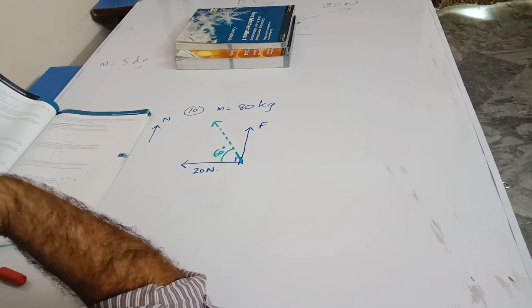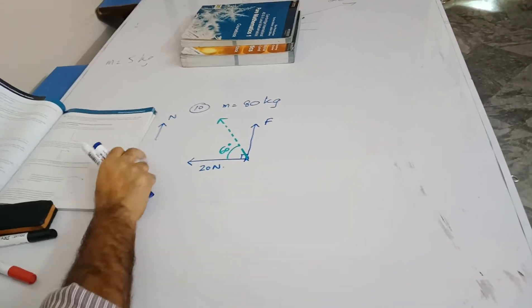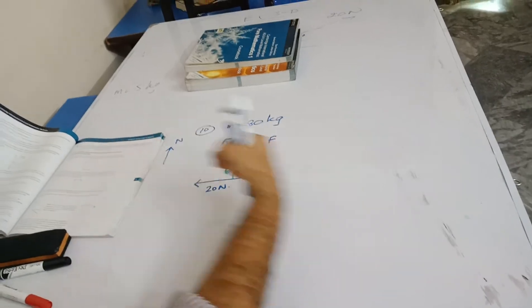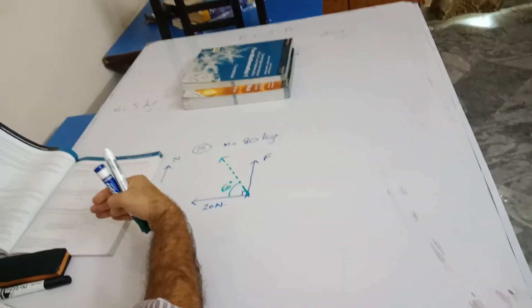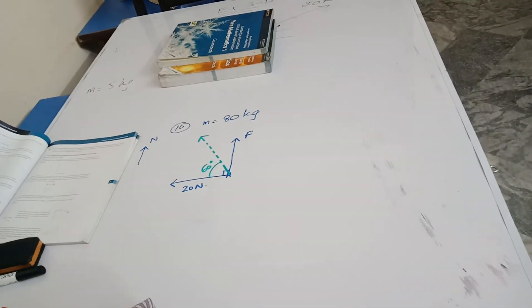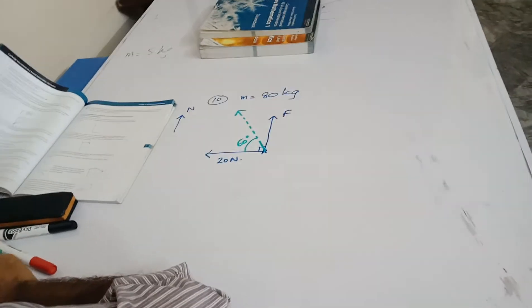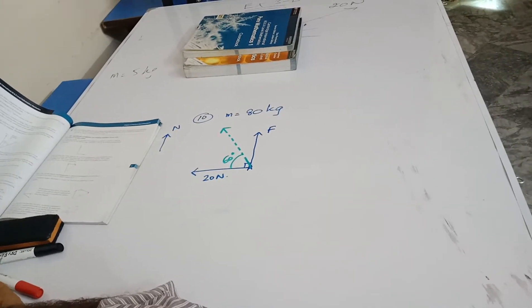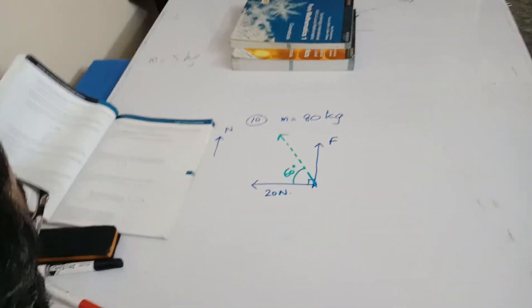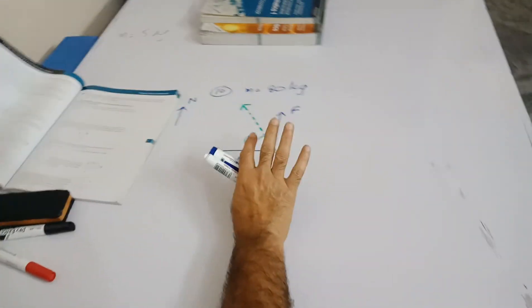They are being pushed by the water with a force of 20 Newtons westward. I have kept this as the north over here, so this is going to be the west in this direction. And then he says the wind is pushing them northwards with the force F. So this is the wind pushing northwards, the force F.